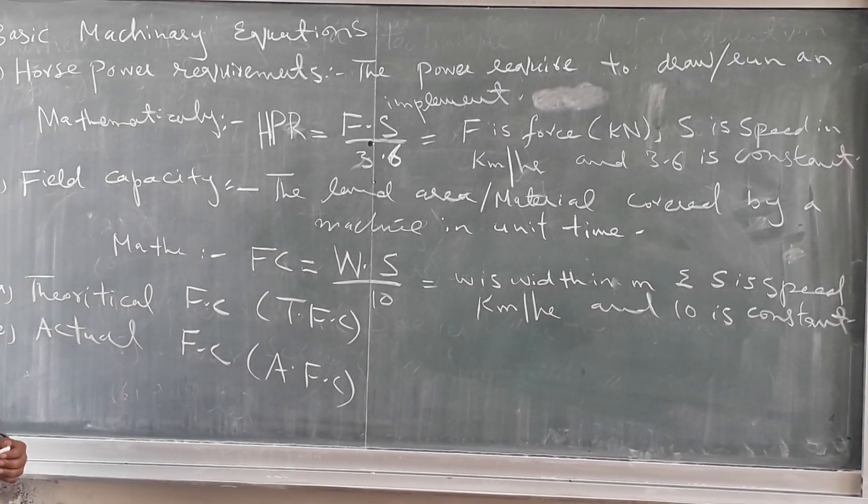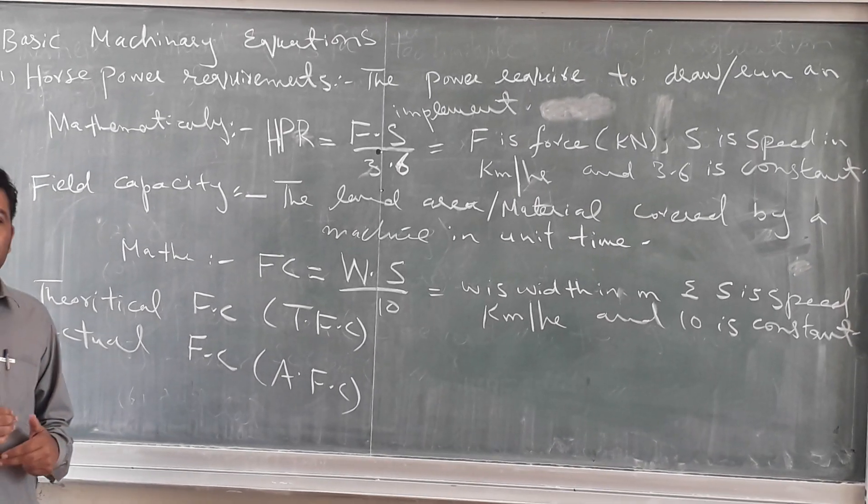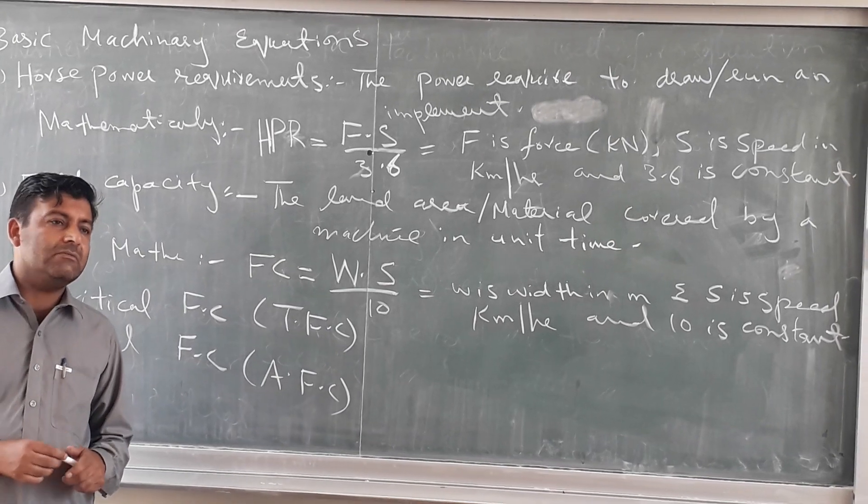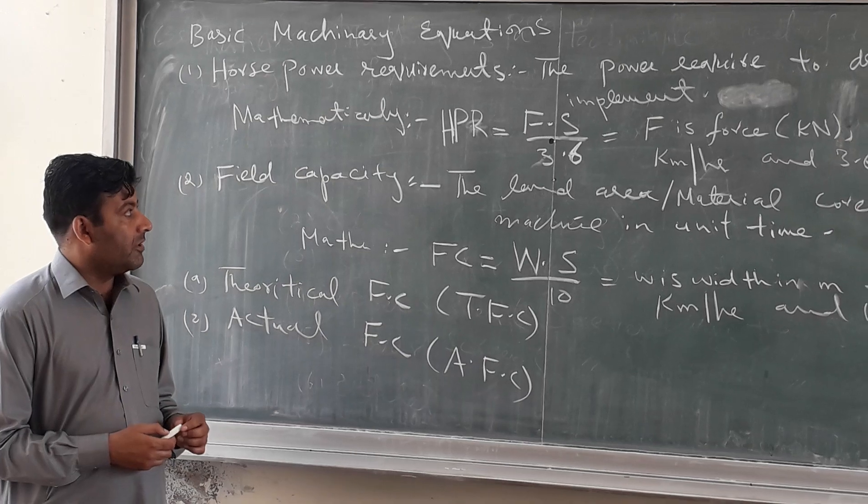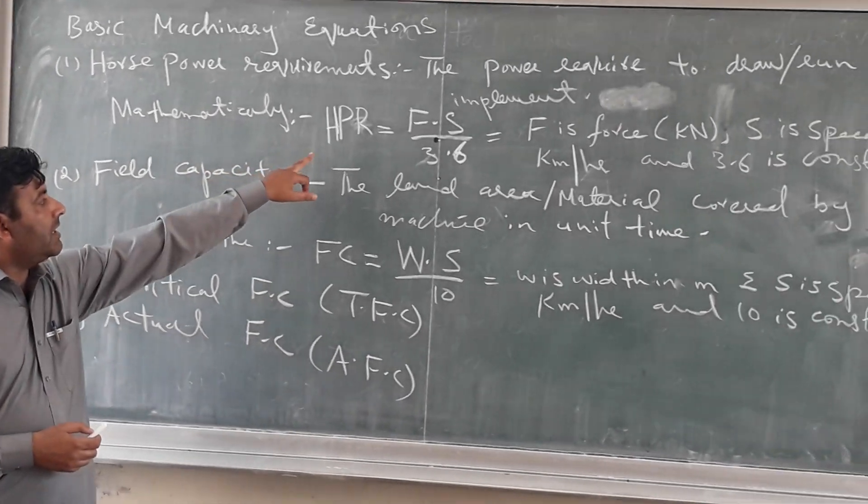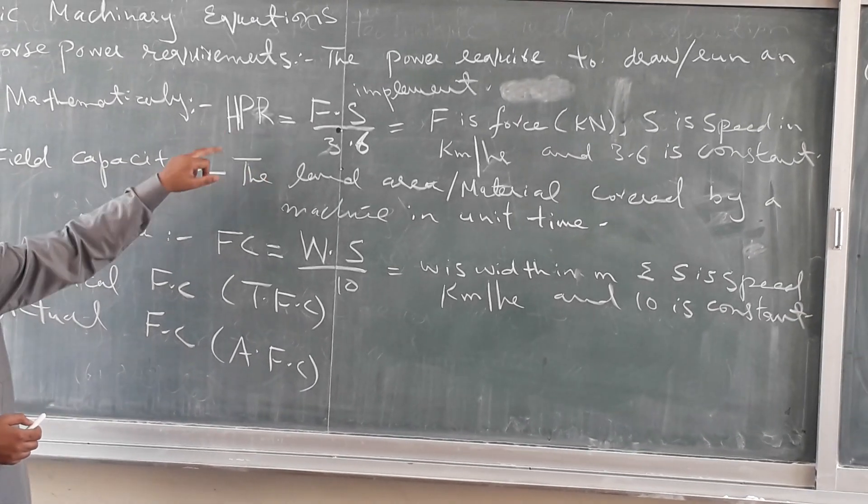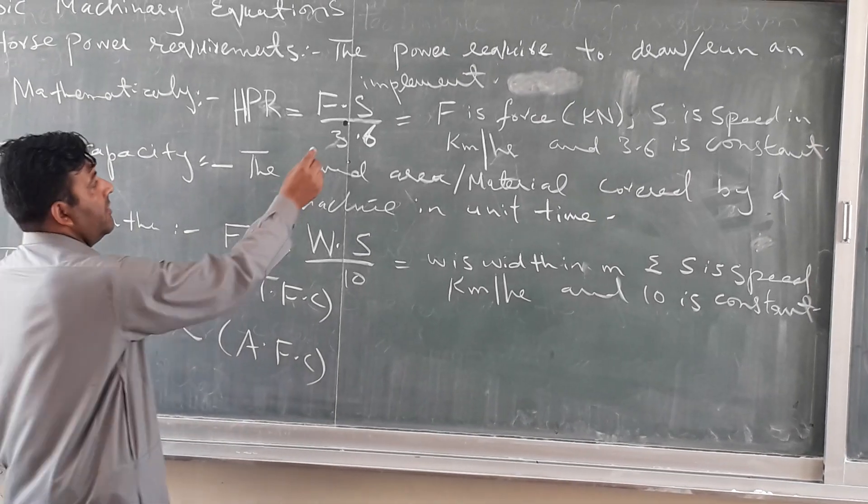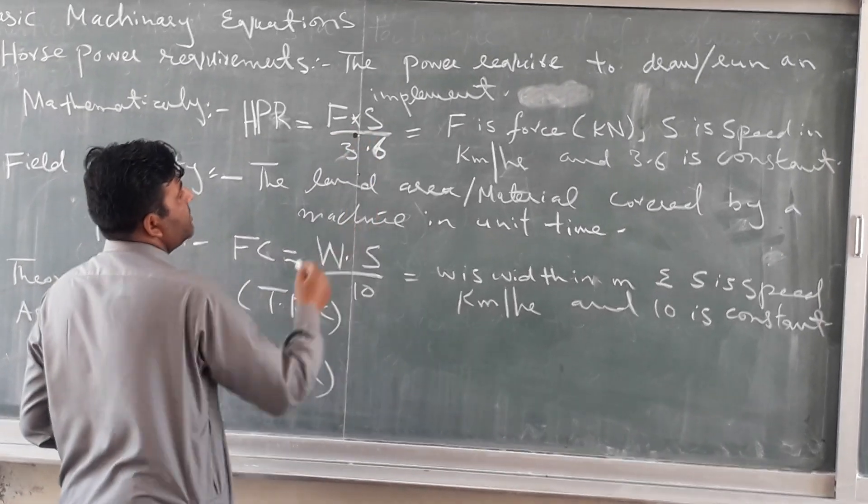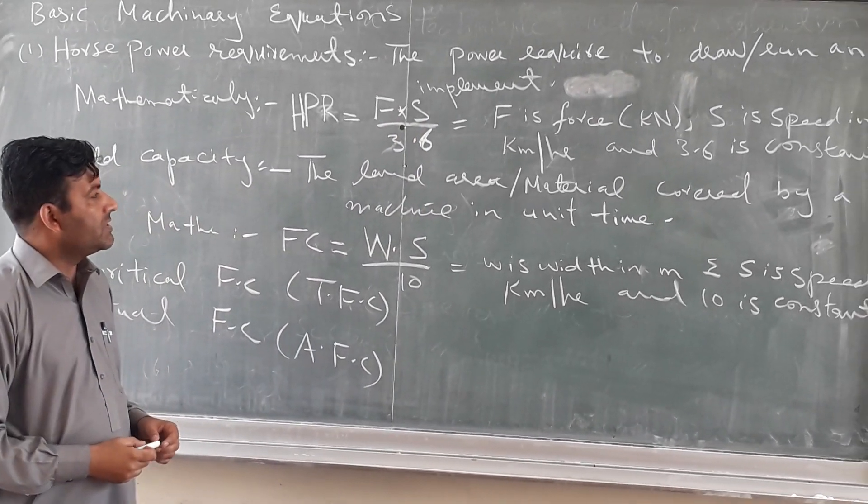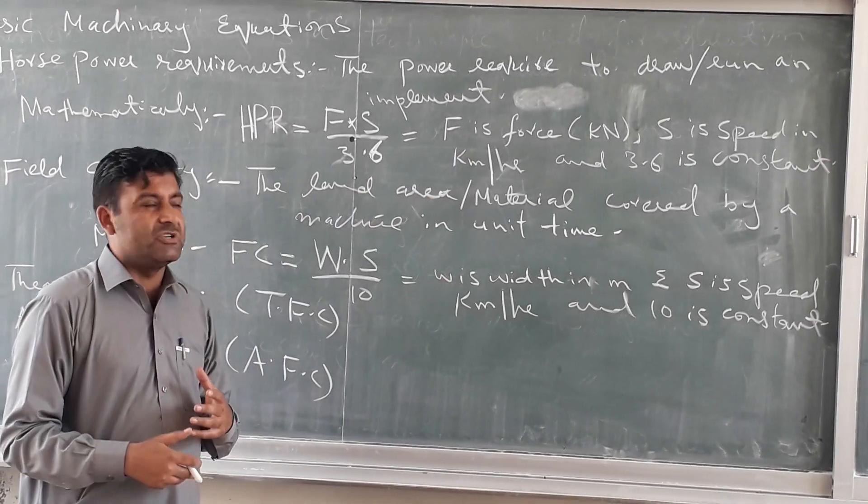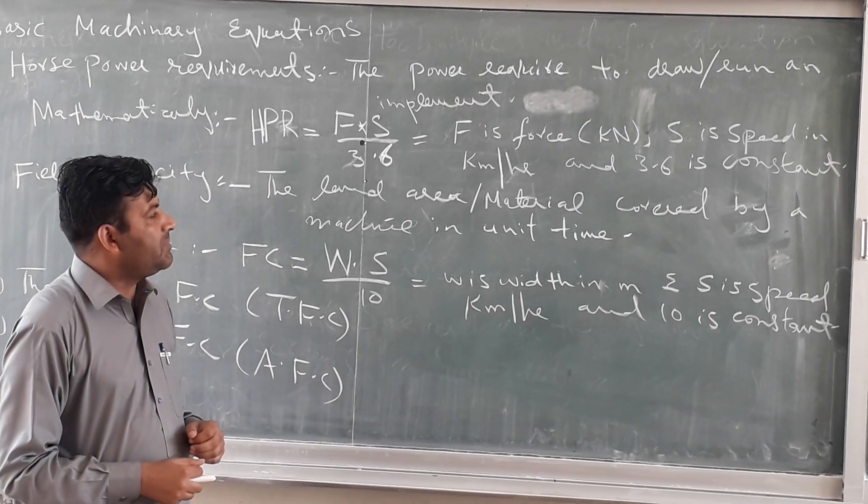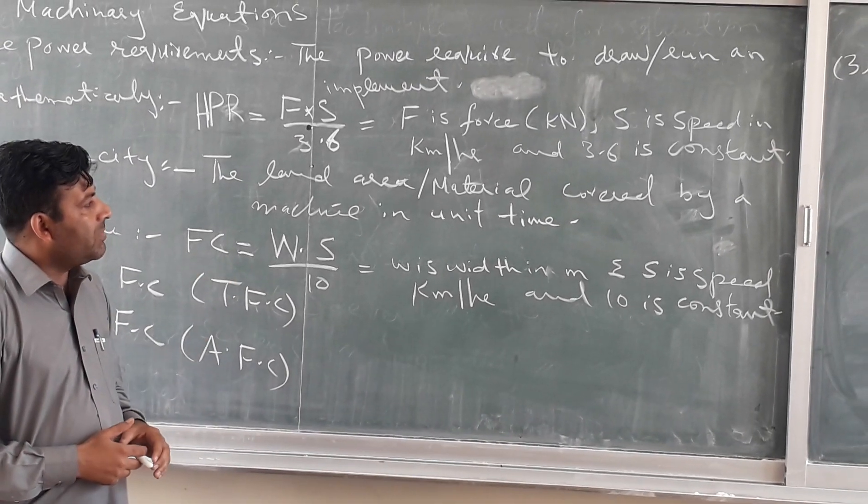This is the power needed to run a machine in the field. Mathematically, horsepower requirement HPR is F into S divided by 3.6. What is F? F is the force required to run this machine and S is the speed in km per hour, and 3.6 is the constant.